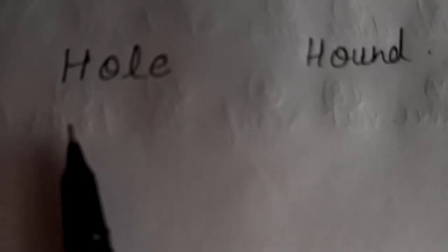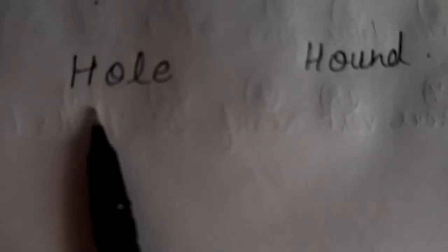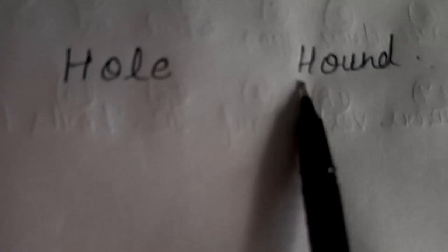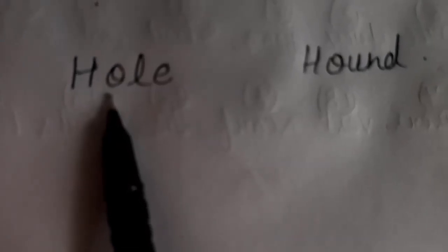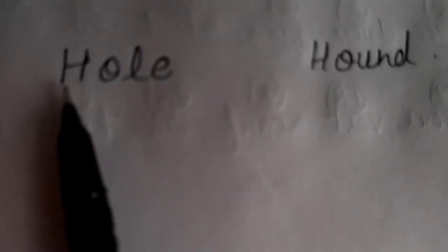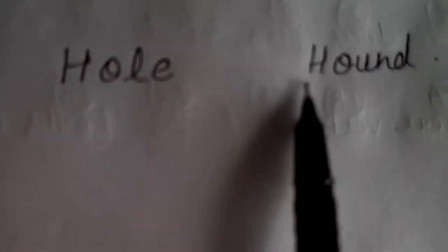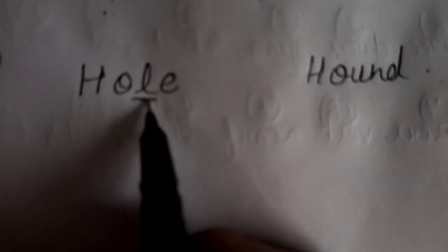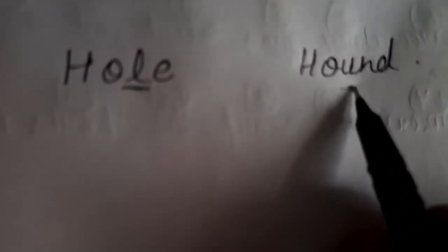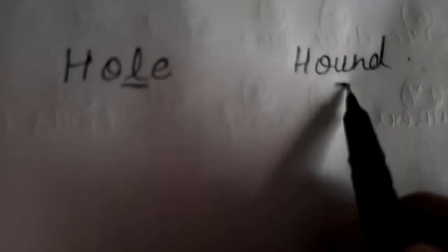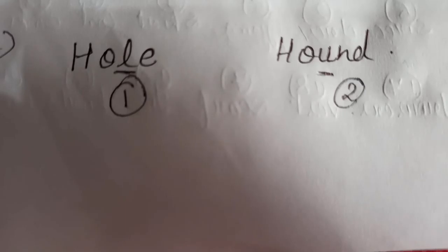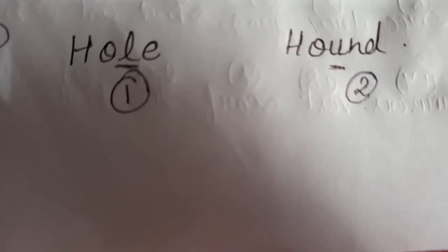Can you tell me which word will appear first? First, we will pay attention to the first letter. Here, both words start with 'H'. Pay attention to the second letter — here also both letters are the same. Now we will look at the third letter. Here the third letter is L and there it is U. As you know, L comes first in alphabetical order, so 'hole' appears first in the dictionary and 'hound' appears afterwards.